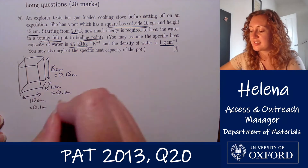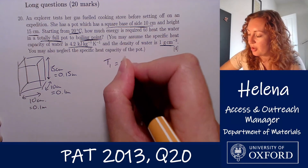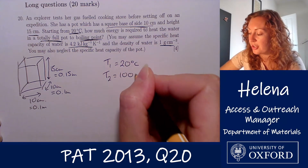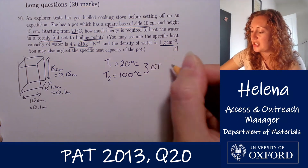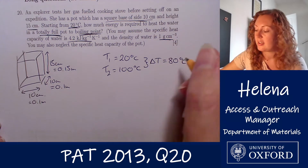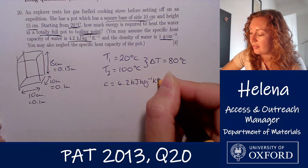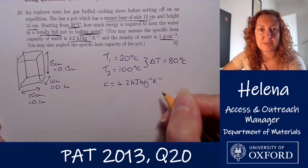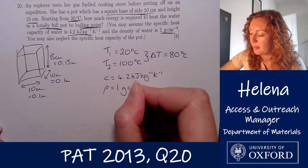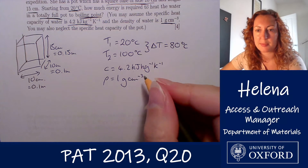This pot is going to be completely filled with water. We have a starting temperature — let's call that T1 — of 20 degrees C, and we're heating the water to boiling point, which is 100 degrees C. So we have a change in temperature, delta T, of 80 degrees C. We're told the specific heat capacity is 4.2 kilojoules per kilogram per kelvin, so that's 4.2 × 10³ joules, and the density of the water is 1 gram per centimetre cubed, which we need to convert to kilograms per metre cubed.